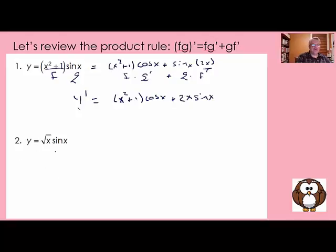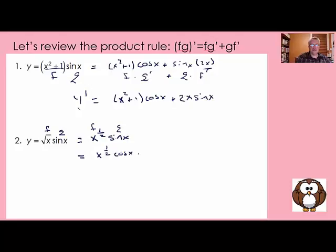Let's find the derivative of this next one. This is f and this is g. It has square root of x, so I'm going to rewrite that — this is just writing it in an equivalent form, x to the 1 half, not taking the derivative yet. So f is x to the 1 half and g is sine of x. The rule says take f, that's x to the 1 half, times g prime, cosine x, plus g, that's sine of x, times the derivative of f, which is 1 half times x to the minus 1 half, using the power rule.